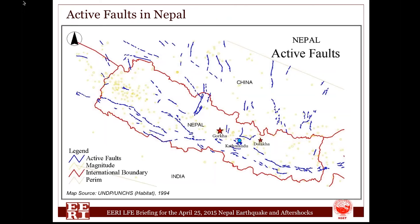There are several fault lines in these fault systems. These fault lines have been mapped during the seismic hazard mapping and risk assessment study done as part of the building code development project implemented during 1992 to 1994.